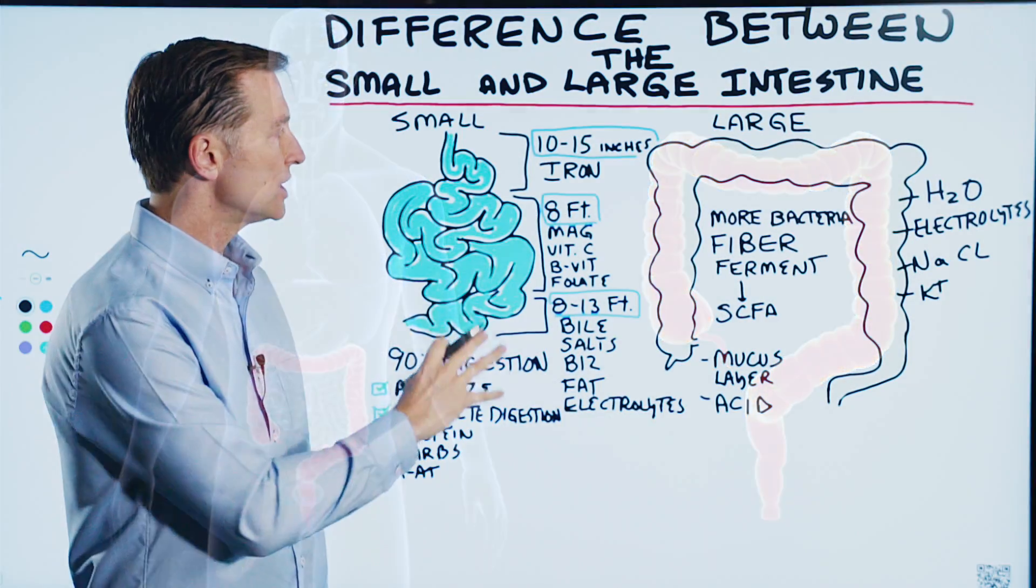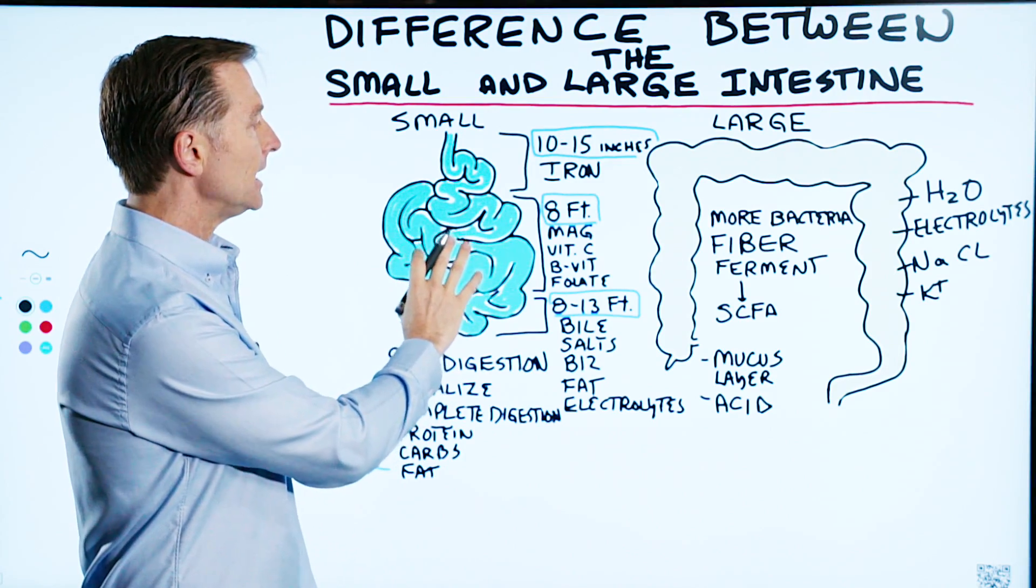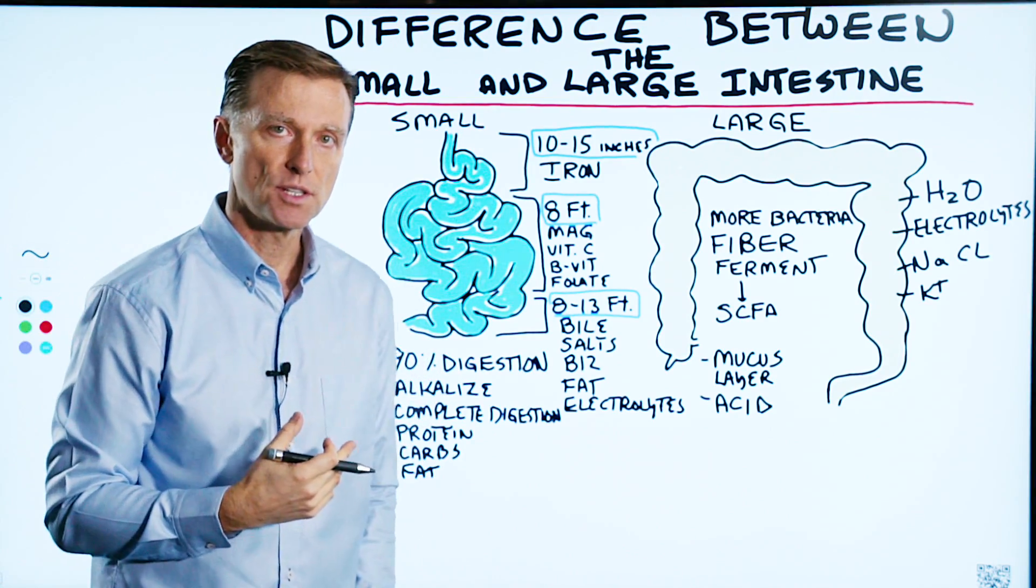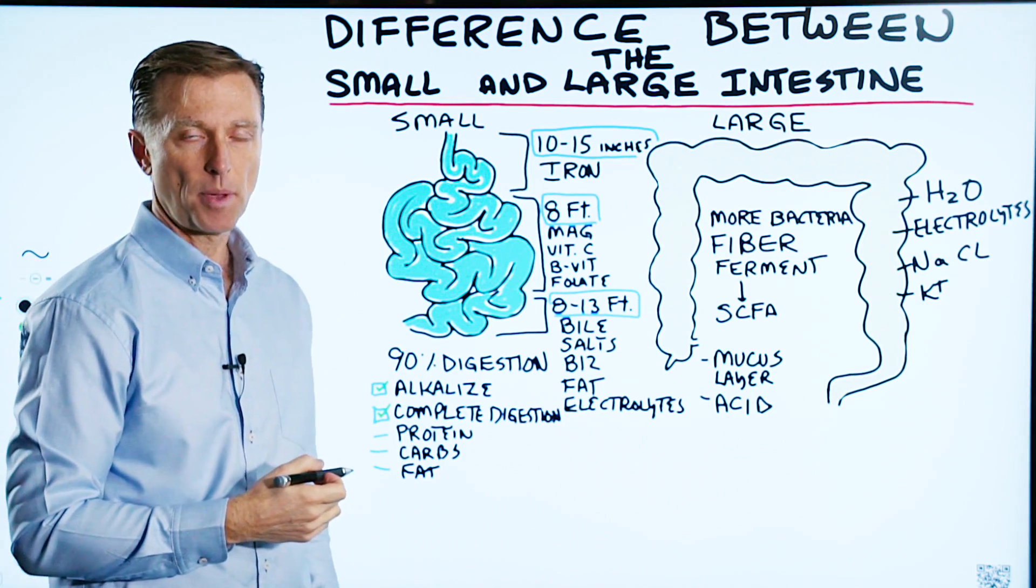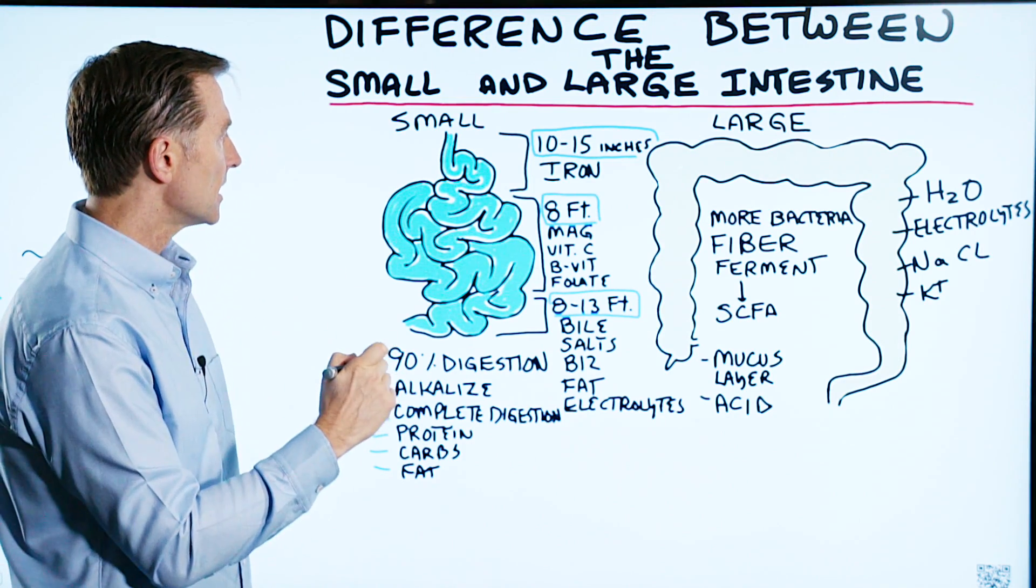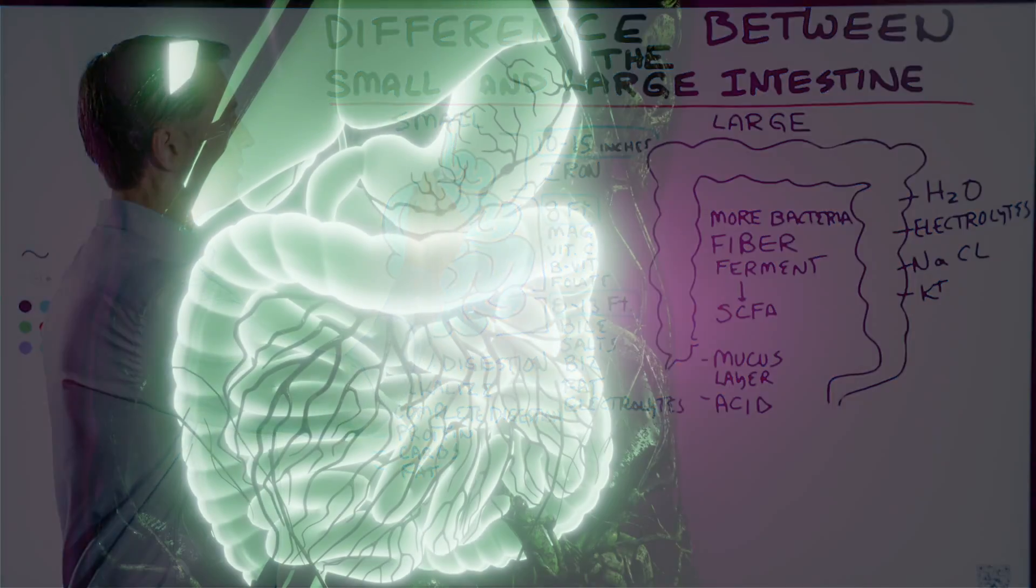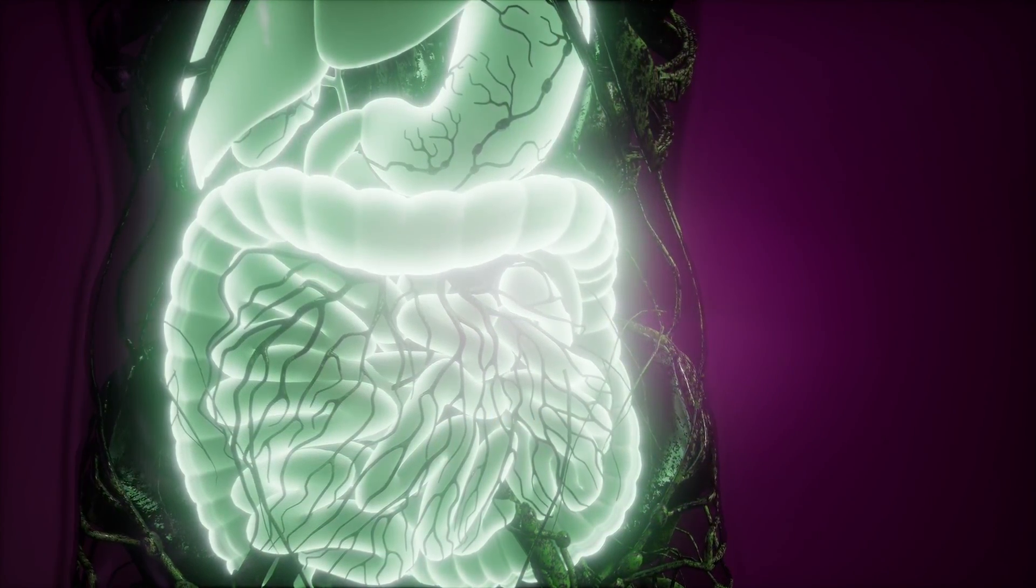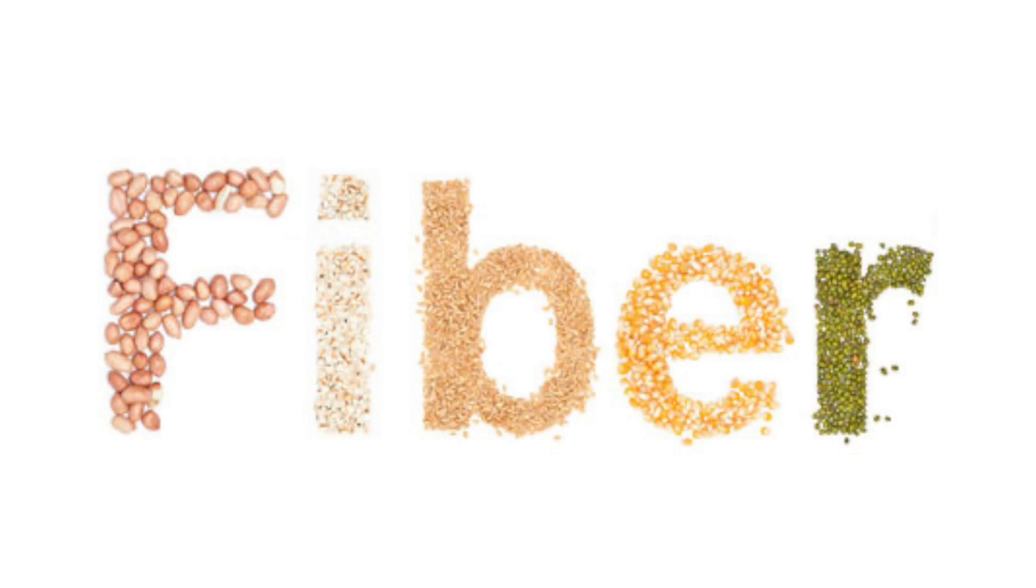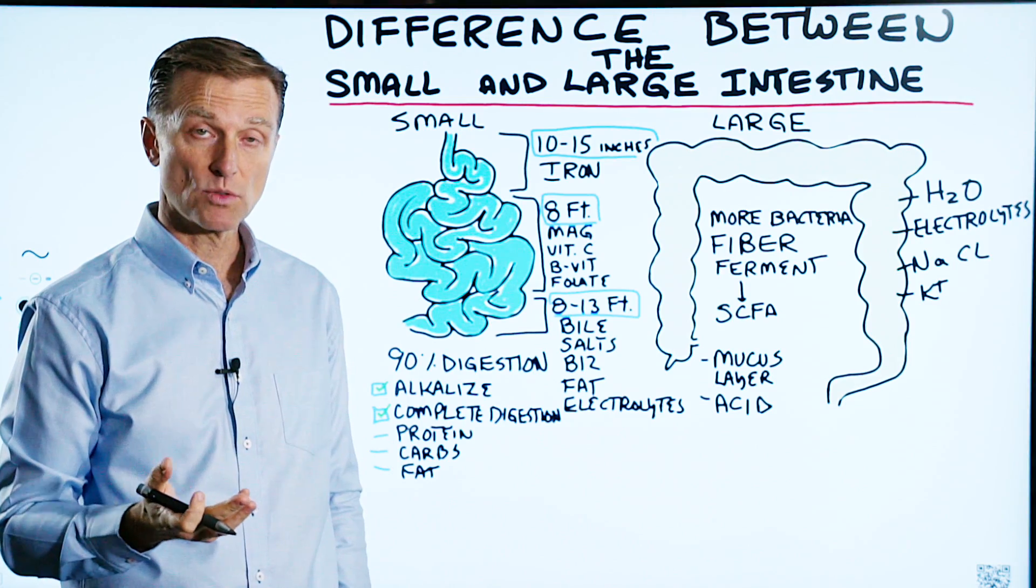So let's start with the small intestine. 90% of all the digestion occurs in the small intestine. Now you have enzymes that are generated from the pancreas, and you also have enzymes that are generated from the small intestine itself to help break down proteins, carbohydrates, and fat, minus the fiber. Our bodies do not have the capacity to break down fiber. We just don't have the enzymes.